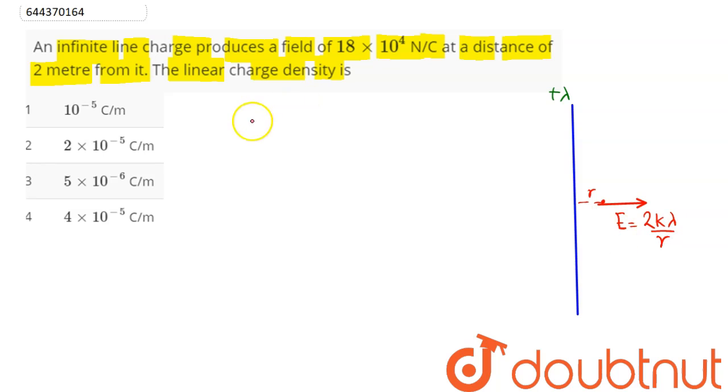As we know, the electric field at distance r from an infinite long wire is 2k lambda divided by r. So the lambda value is equal to E into r divided by 2 into k.